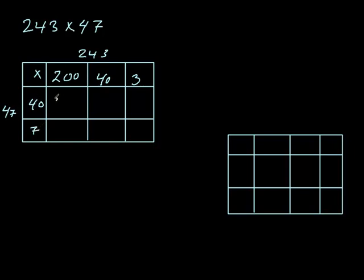What is 4 times 2? 8 and 3 zeros, so it's 8000. 4 times 4 is 16 with 2 zeros making 1600. And 4 times 3 is 12, so it's 120 because it's 40, not 4.